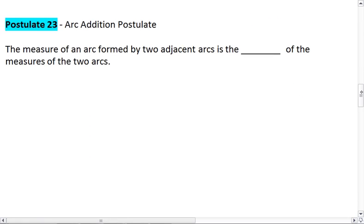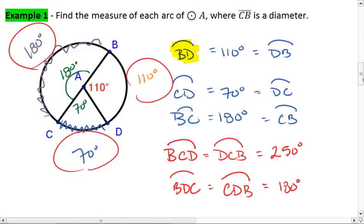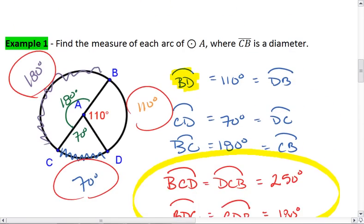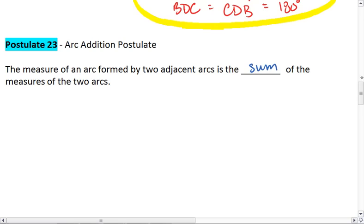This leads us to postulate 23, the arc addition postulate. We saw this above when looking at these arcs down here. The arc addition postulate tells us that the measure of an arc formed by two adjacent arcs is the sum of the measures of the two arcs. So here,